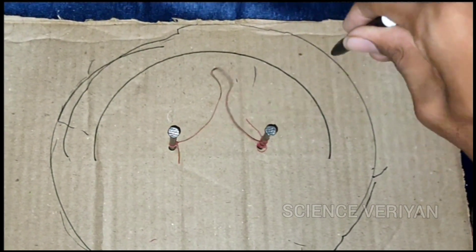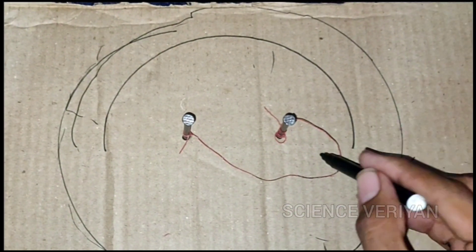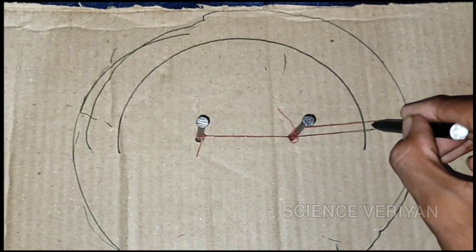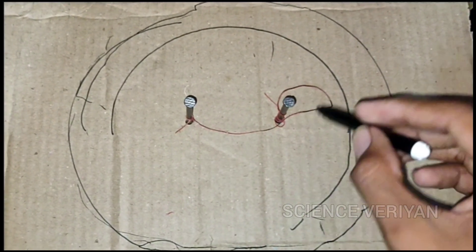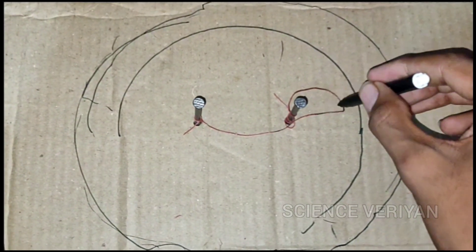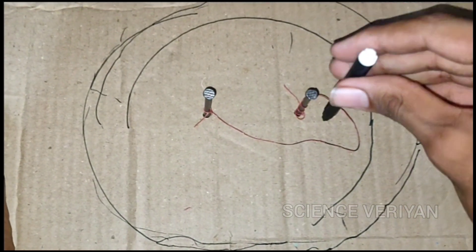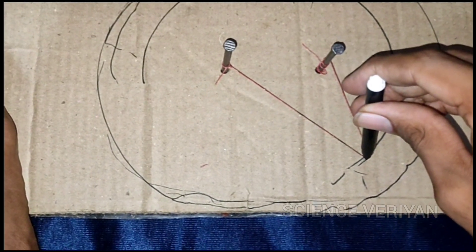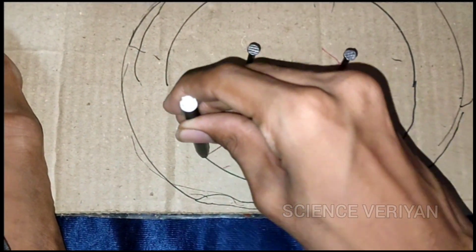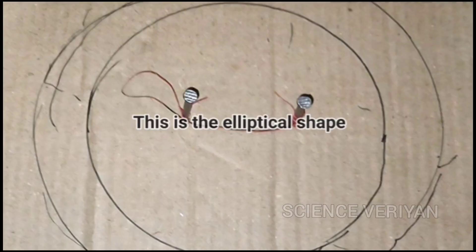If you add two lengths to the set and add the length to the row, you can get the length to the row. So we are going to show you the elliptical shape ready.